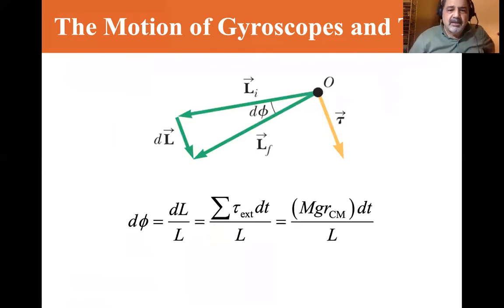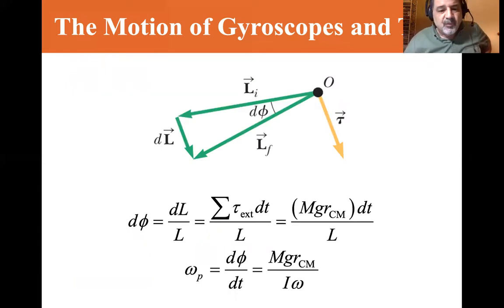You can see that D phi is equal to DL over L is equal to the sum of the torque external DT over L, which is MGR, where R is the center of mass, DT over L. And the precession frequency Omega P is equal to D phi DT, which is equal to MGR center of mass over I Omega.